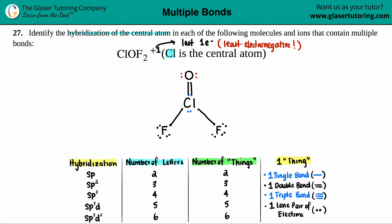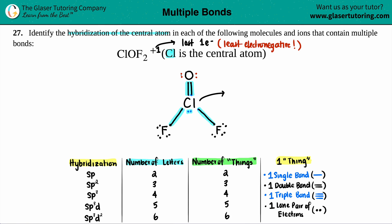The number of letters corresponds to the number of things around the atom: two letters means two things, three letters means three things. One single bond counts as one thing, a double bond — even though you see two lines — is still one thing, a triple bond is one thing, and a lone pair is one thing. For chlorine: it has one single bond (one thing), another single bond (two things), a double bond grouped as one thing (three things), and a lone pair (four things). So chlorine has four things around it — that's four letters: SP3. Box that answer, and we are done. That's the hybridization of the central atom, chlorine.